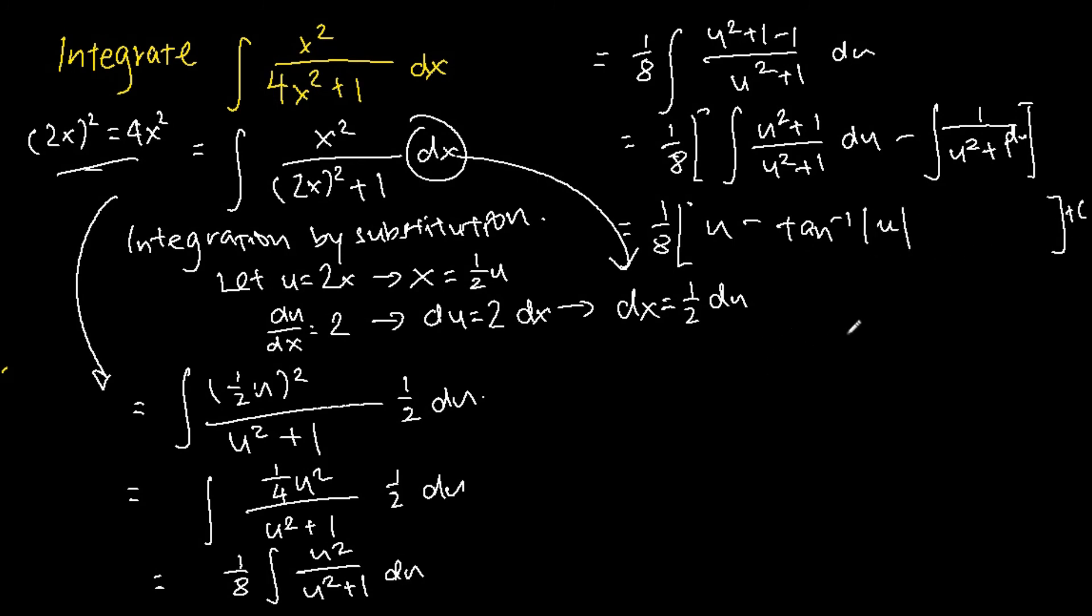And last but not least, because the question is in terms of x, so we have to substitute back 2x. So u equals 2x. And hence we substitute all the u as 2x. We'll finally get 1 over 8 square bracket 2x minus tangent inverse 2x plus c.